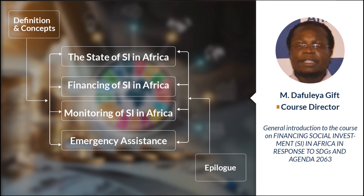And finally, we look at emergency assistance in Africa. We wrap it up through an epilogue at the end. What will be interesting in this course is how we perceive and see social investments through the lens of social protection as well as social services. That is basically the core. I surely hope this will be beneficial for you. Thank you so much.